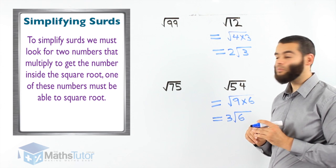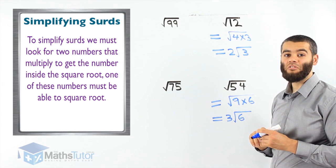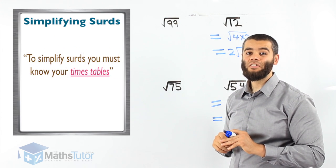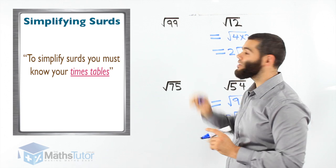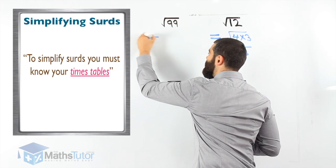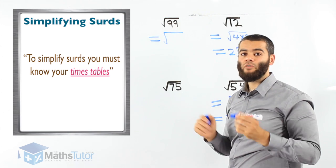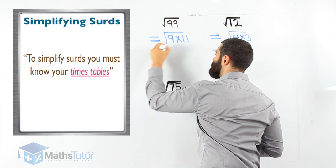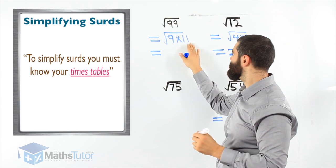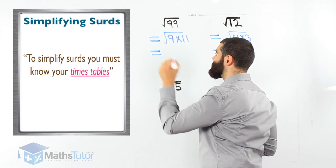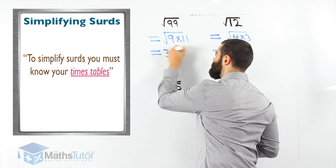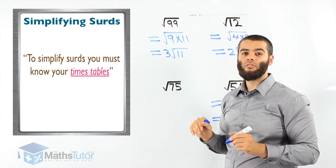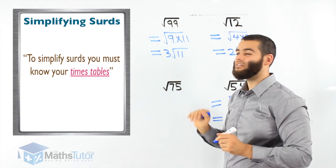So the rule: we look for two numbers that multiply to get the number under the surd, and one of them must be able to square root. The square root of 99 — think about it. The factors of 99: what two numbers multiply to get 99 where one of them square roots? 9 times 11. The 9 square roots — it becomes 3. So the answer is 3 root 11. Square root 99 is exactly the same as 3 root 11.